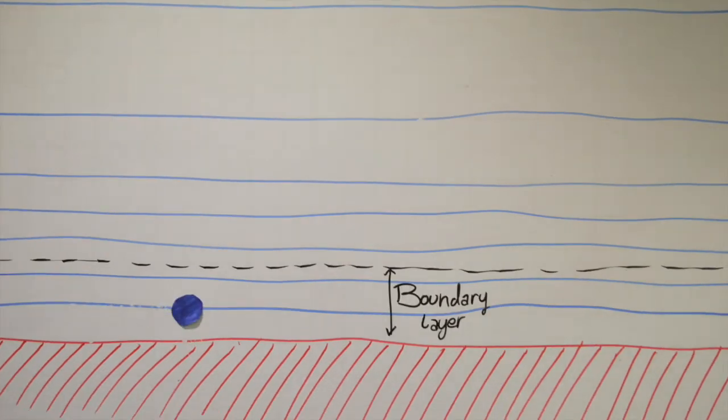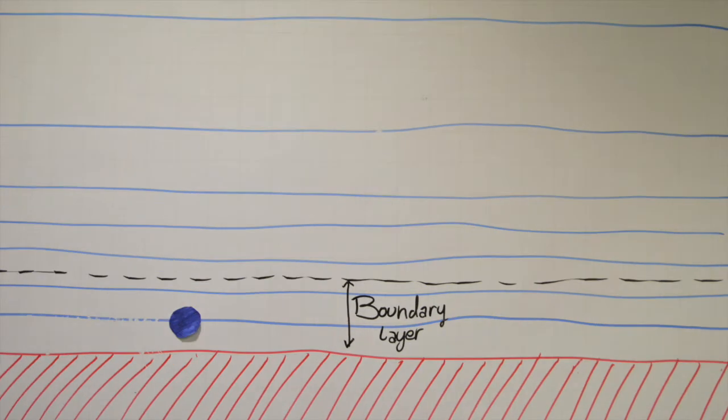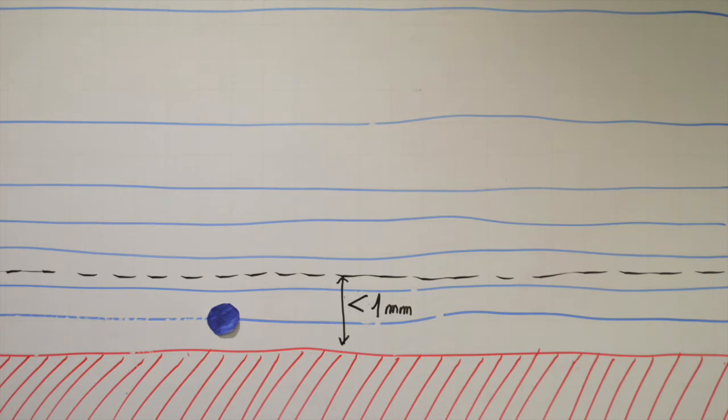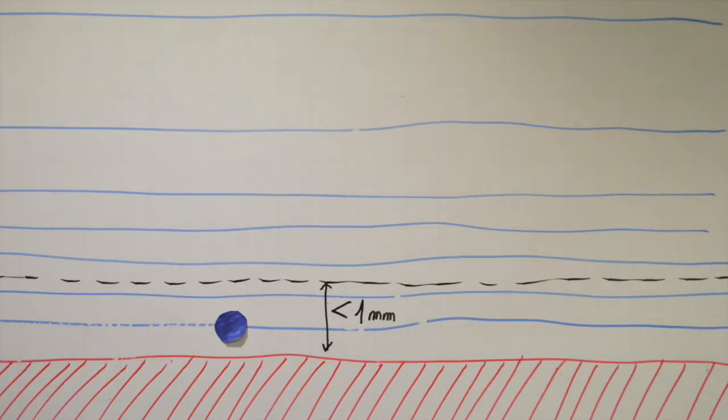This region where the air moves slowly is called a boundary layer. Inside, the air behaves like a viscous fluid, not completely different to honey. The maths describing the thin boundary layer are well understood.